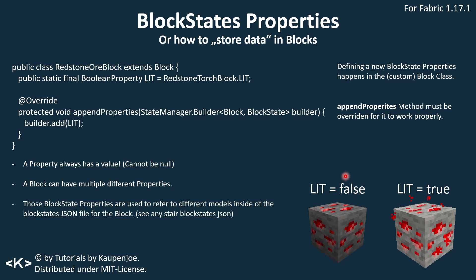Here's one example: this is the lit-equals-false redstone ore block, and this is the lit-equals-true redstone ore block. What's important is that the actual particles are not part of the boolean property per se — they're actually being spawned in a different way, which I'll show you when we take another look at the RedstoneOreBlock class.